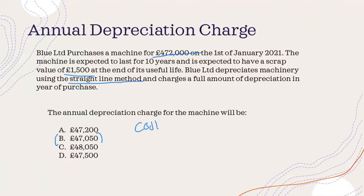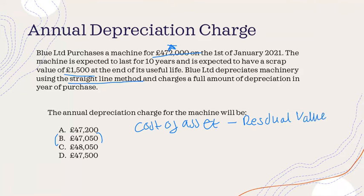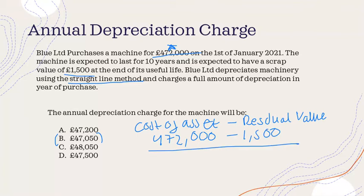The straight-line method is basically the cost of an asset — in our case £472,000 — minus its residual value of £1,500, all divided by 10. So the formula is: cost of asset minus residual value, divided by the useful life of the asset.